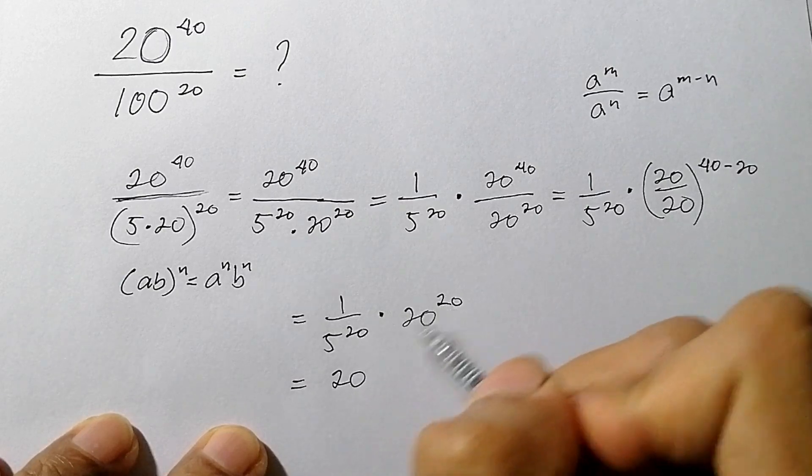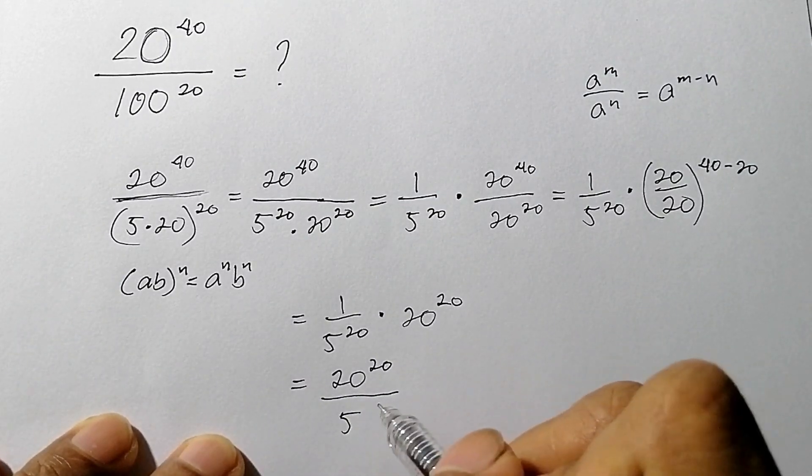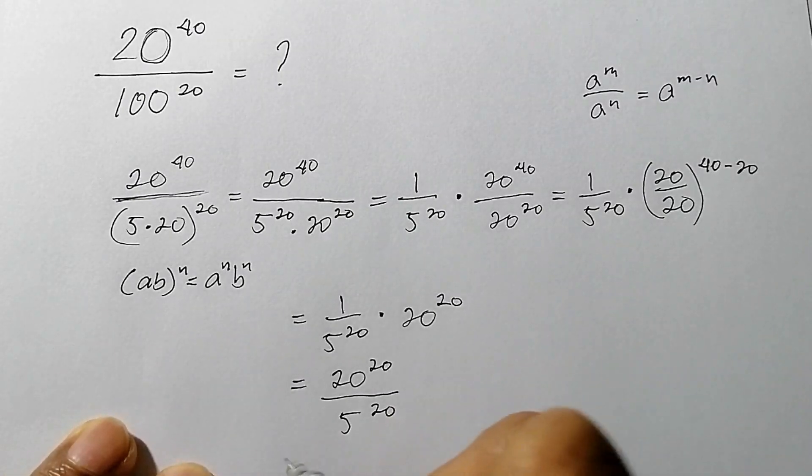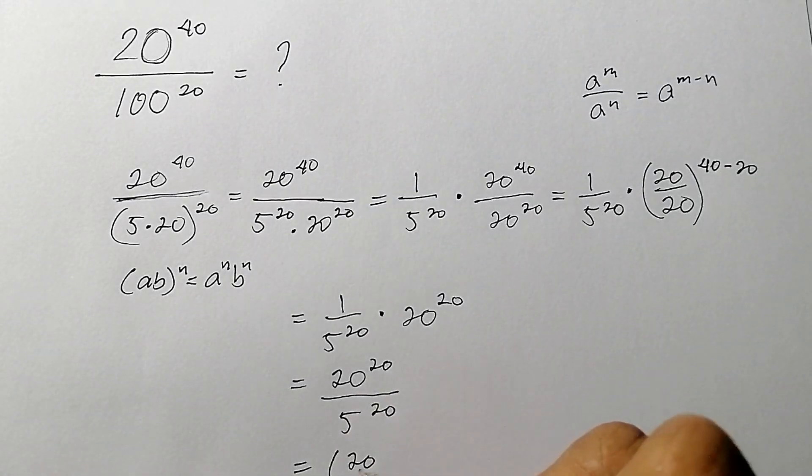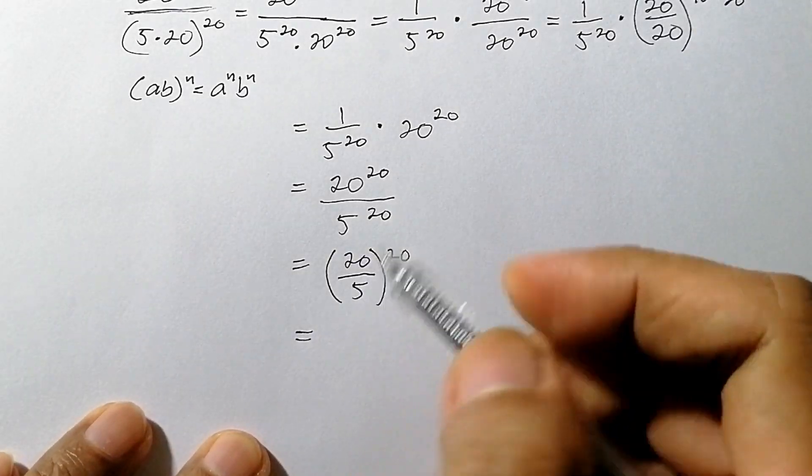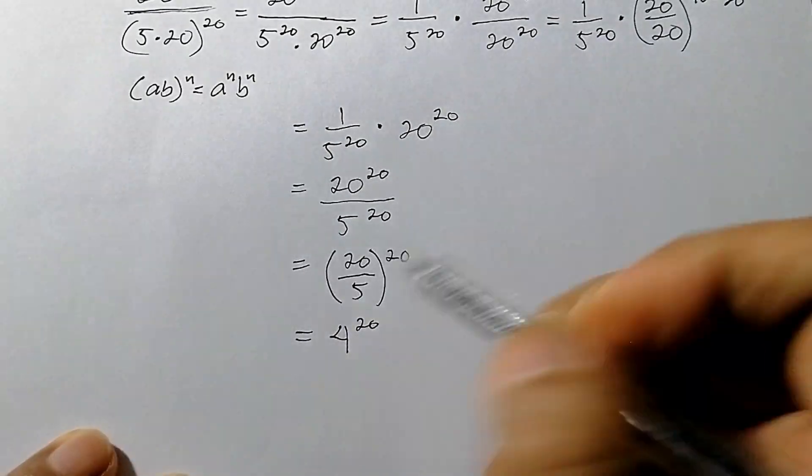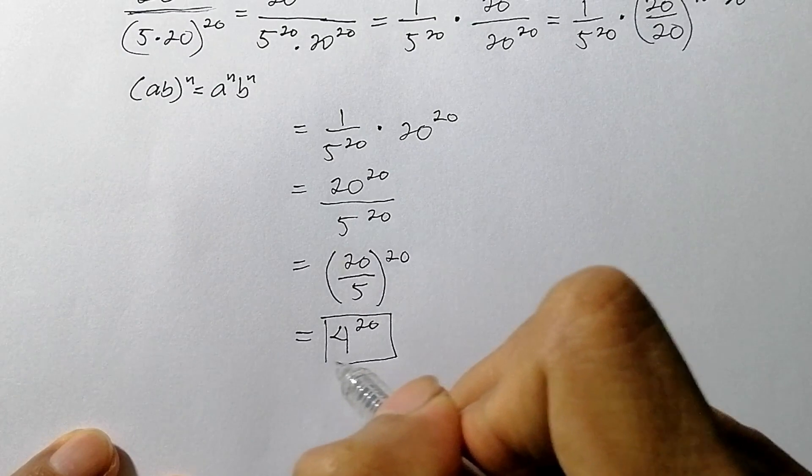So 20 raised to 20 all over 5 raised to 20. Now 20 over 5 - we just copy the power 20. 20 divided by 5 is 4 raised to 20. So this is the final answer.